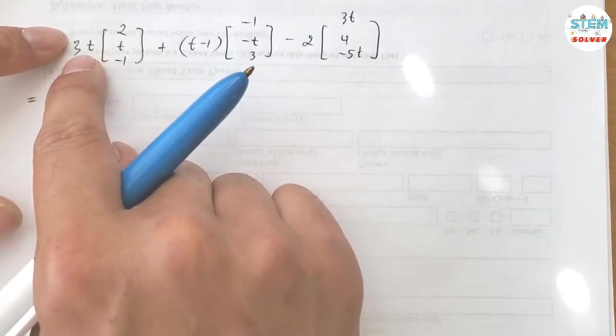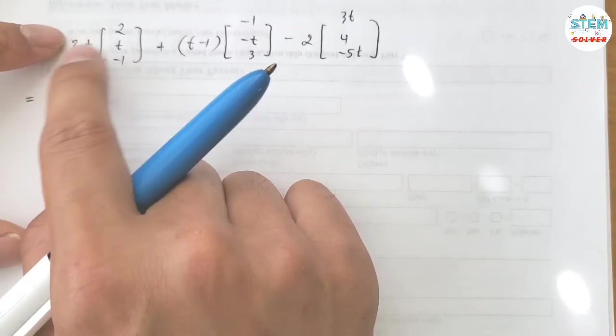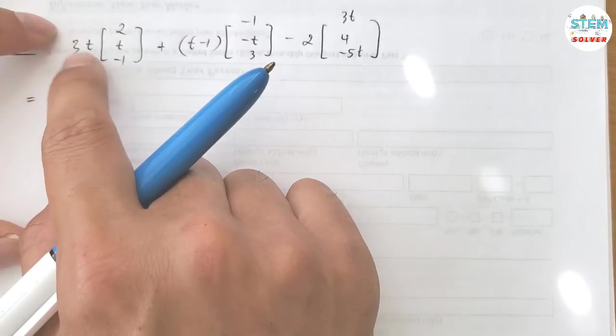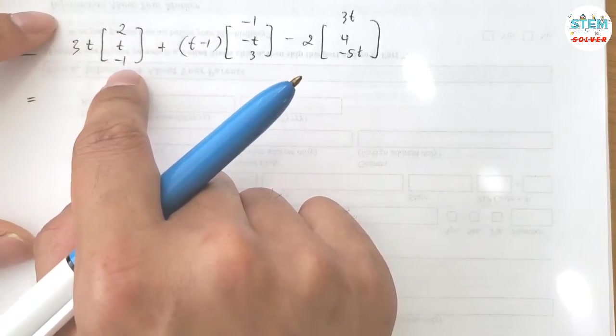When you multiply a matrix with a scalar or function, you multiply and distribute to every single element inside.